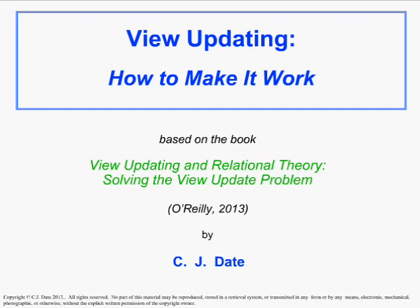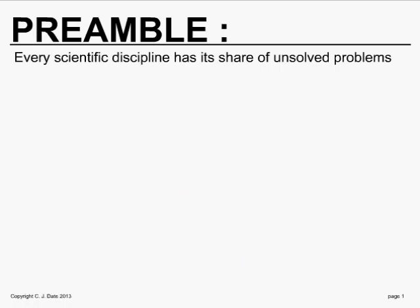This is a topic that has caused a lot of grief over the years. It's been a contentious issue ever since the relational view concept was first invented, back in 1969-1970. Right up to today, there's a general perception that certain views, at least, simply cannot be updated. I don't believe that. I believe that all views are potentially updatable, and in this presentation I want to try and convince you that I'm right on that one.